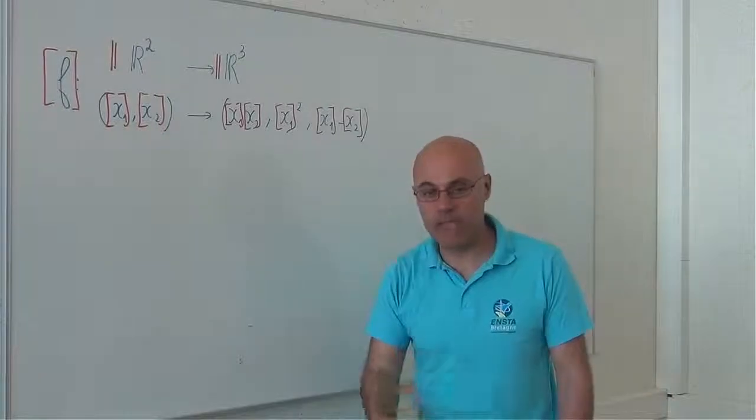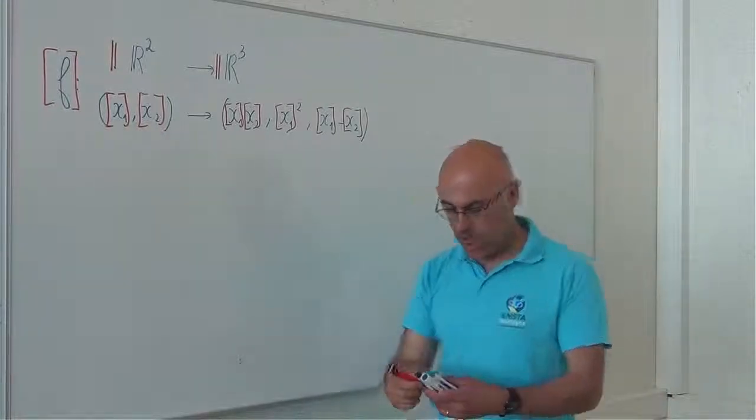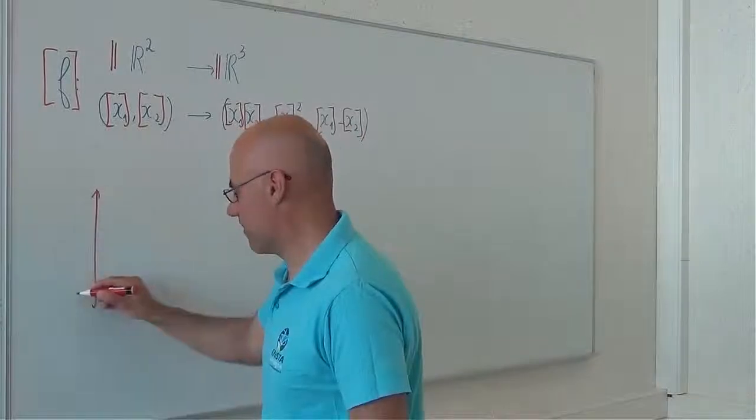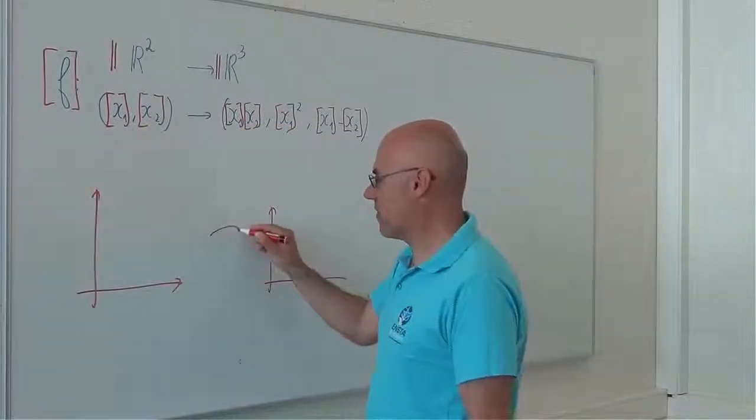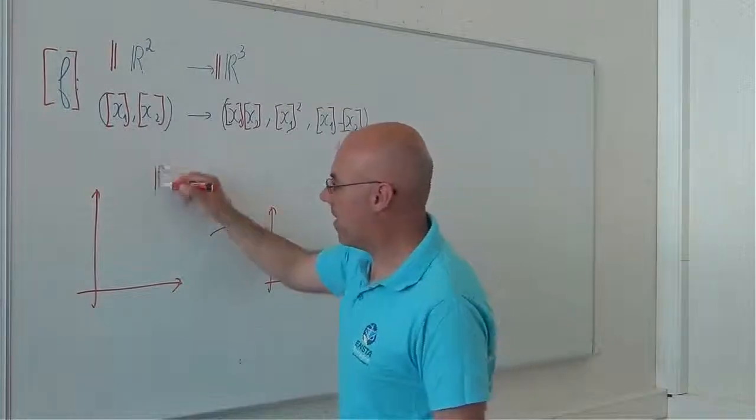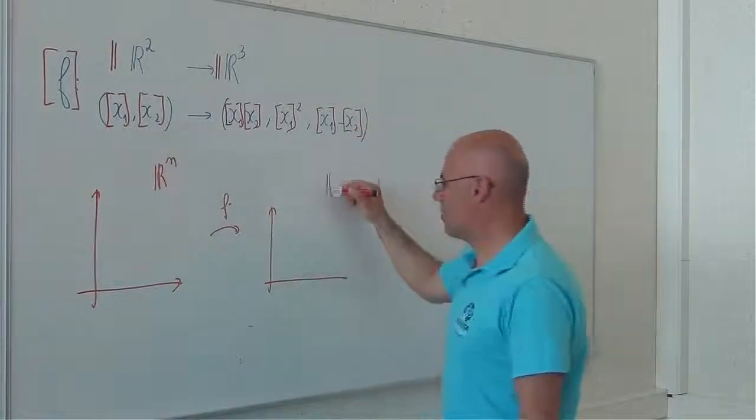then we have the minimal inclusion function. What is the minimal inclusion function? I have a function f from Rn to R.